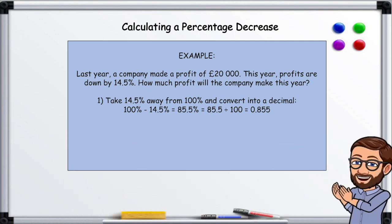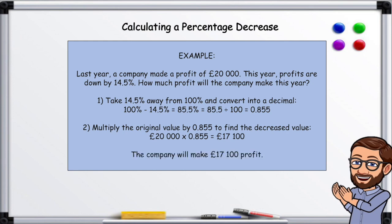That's a decimal, and then we multiply the original value by 0.855 to find the decreased value. So £20,000 multiplied by 0.855 equals £17,100. The company will make £17,100 profit.